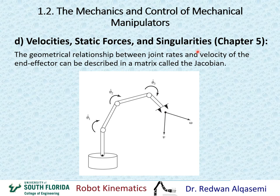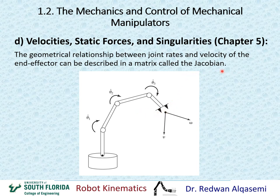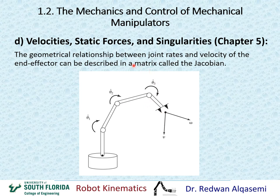For velocities, static forces, and singularities, we typically need to find a matrix called the Jacobian matrix, which builds a relationship between the joint velocities of the robot and the Cartesian velocities — both linear and angular — of the tool tip or end effector. The Jacobian is also a relationship between the static forces affecting joint forces and torques, and the Cartesian forces and torques acting on the end effector. So both velocities and static forces are related by the Jacobian between the Cartesian end effector and the joints.